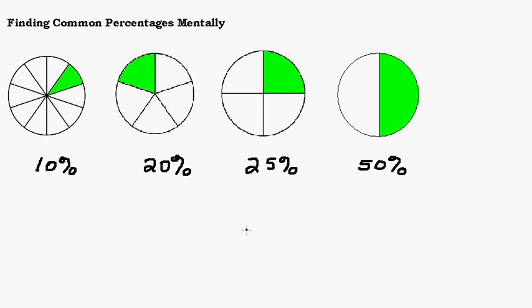Alright, now looking at these pieces of pizza, or these slices of circles here, help us to determine our shortcuts, which I am going to write in red. We can see 50% of something is half of it. So the shortcut for being able to figure out 50% of something is dividing by 2. And you probably already knew that one.